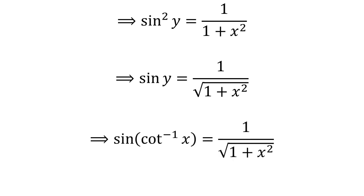As we had assumed y is equal to arccotangent of x, this implies that sine of arccotangent of x is equal to 1 divided by the square root of 1 plus x squared.